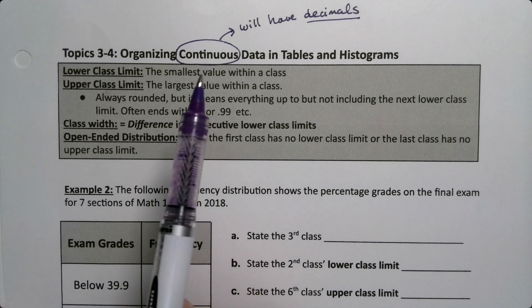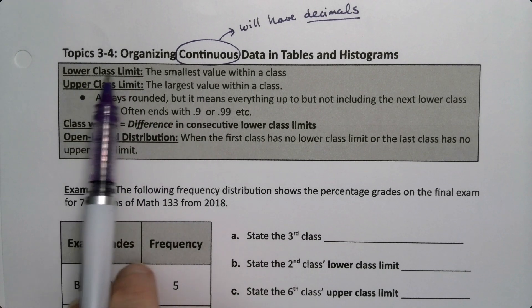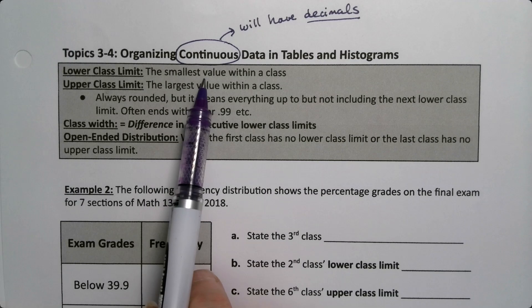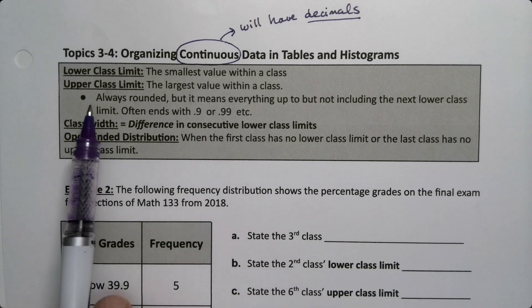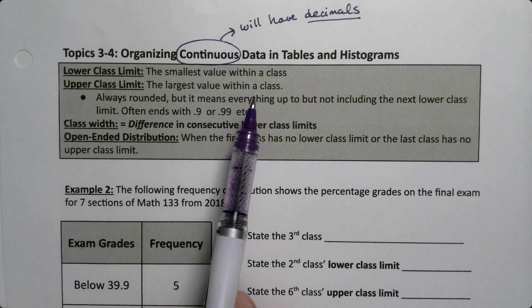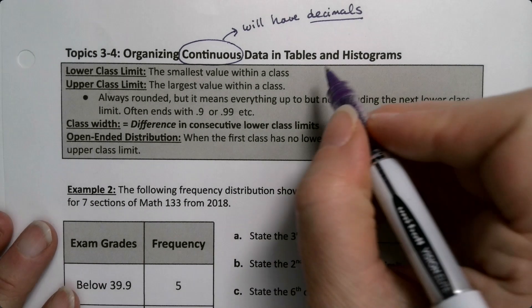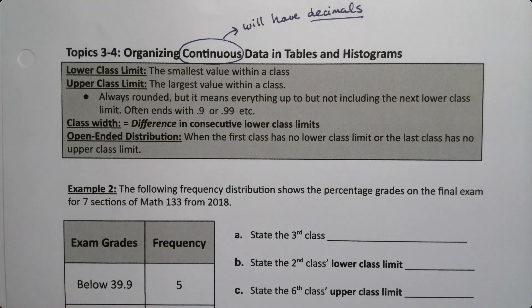We have several definitions to look at. The lower class limit is the smallest value within a class, and the upper class limit is the largest value within a class. Remember, classes are also known as bins.